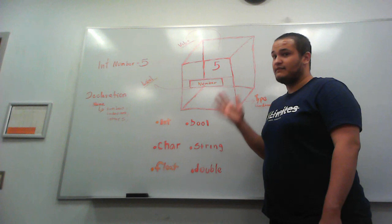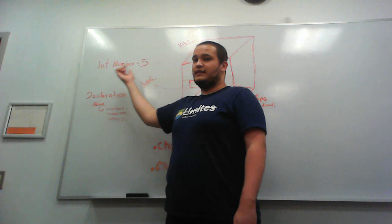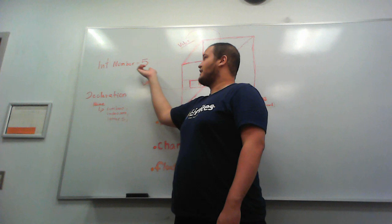So if I were to assign this box as a variable, I would first specify the type, which is an integer, because it holds the number five. The number five is an integer. The name, in this case number, and the component, the number five itself.